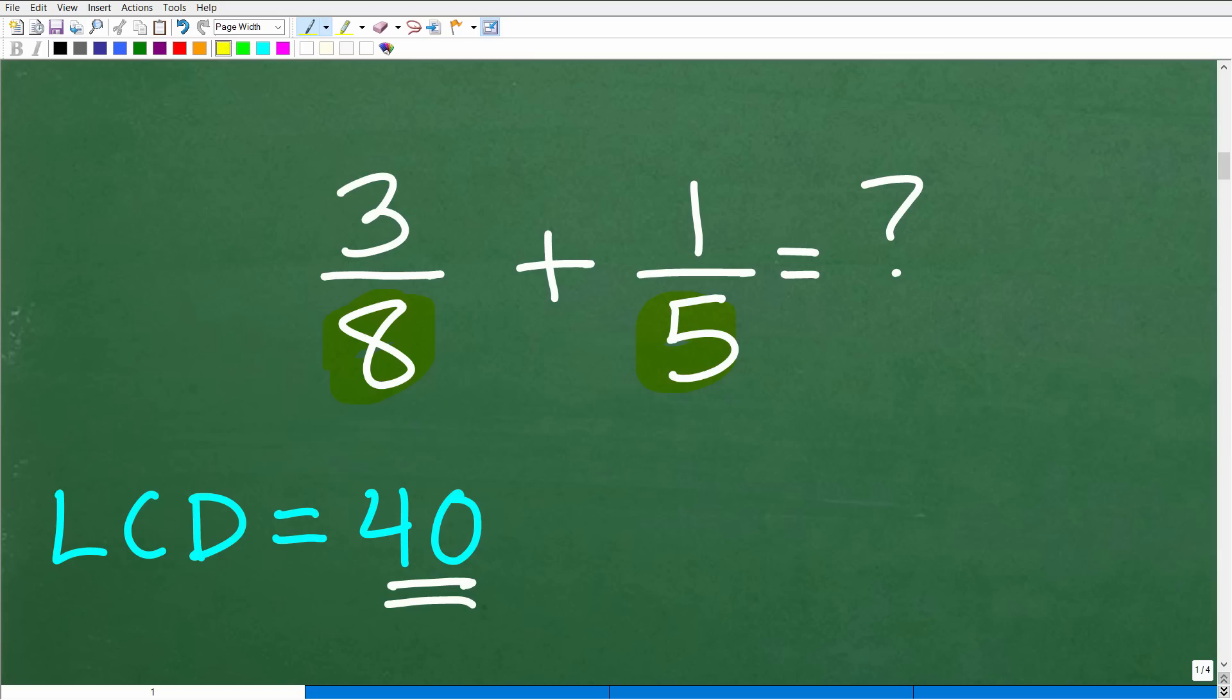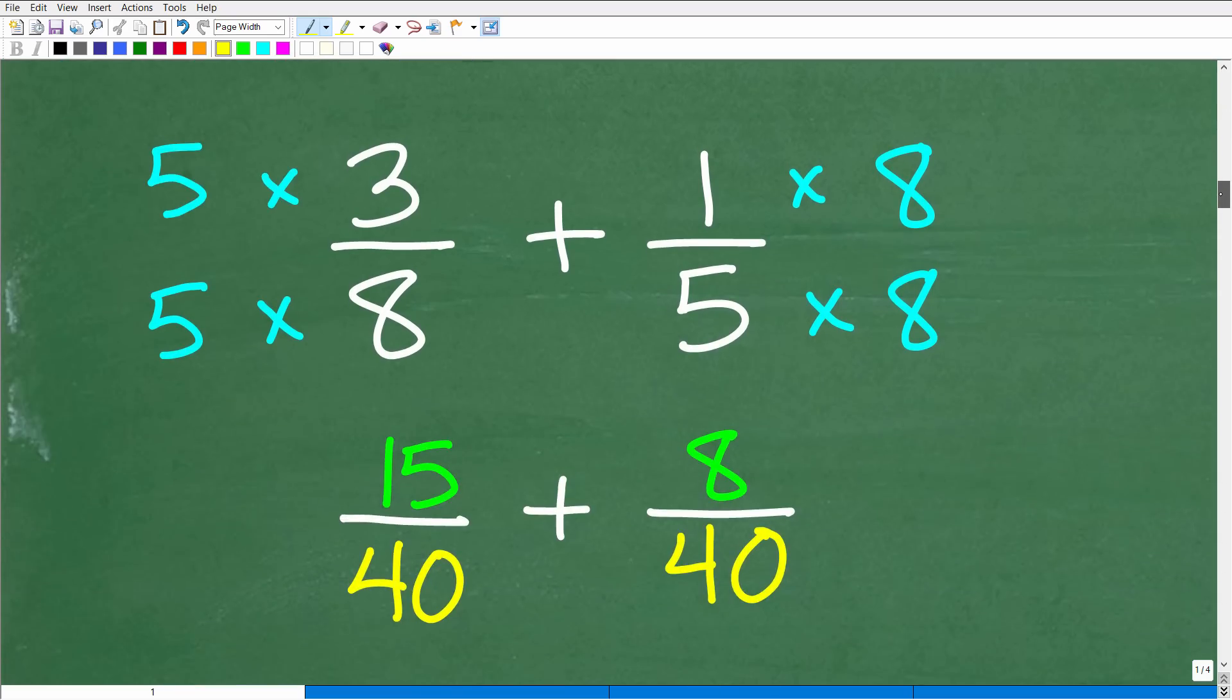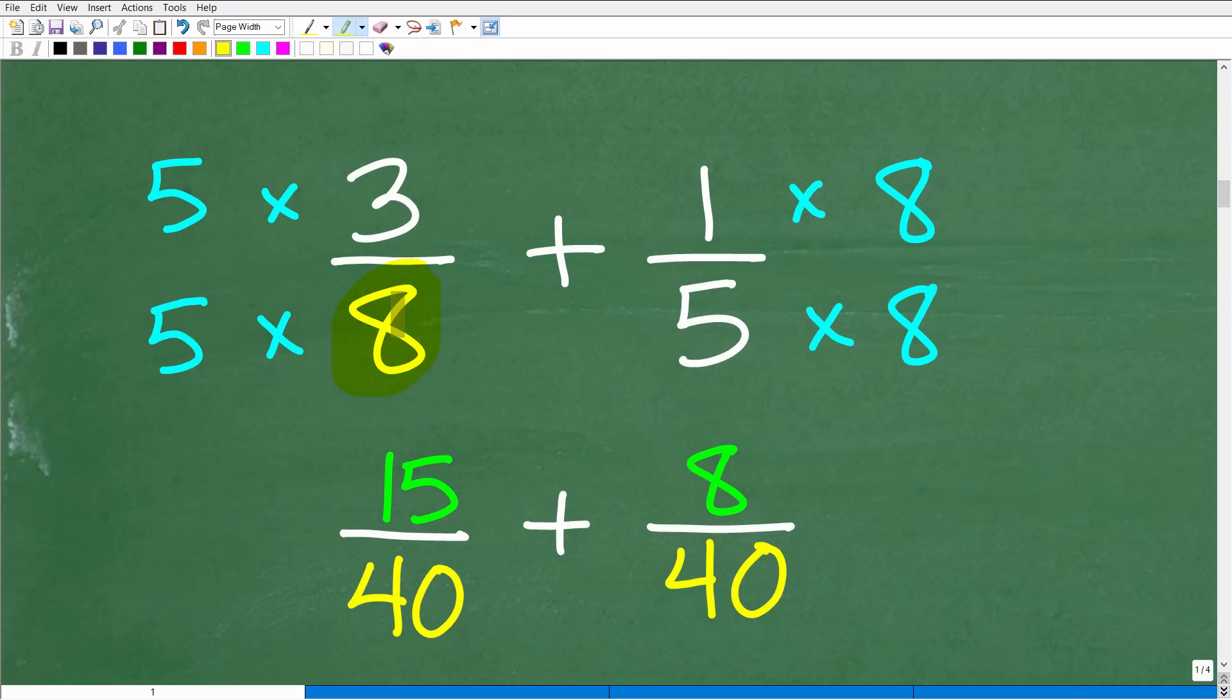All right, so the lowest common denominator is 40, meaning we need to rewrite these fractions such that the denominators down here are both 40. Okay, so this is pretty much what most of you out there are used to when you're adding and subtracting fractions. So let's go ahead and do that now. Now, so we're going to have to turn the 8 into a 40. Now we're going to have to turn this 5 into a 40.